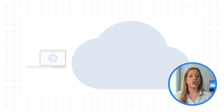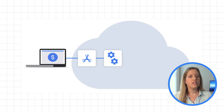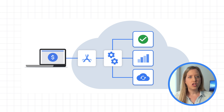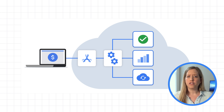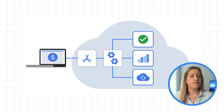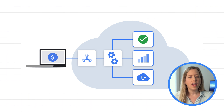Spanner does a lot of work behind the scenes to ensure availability, consistency, and performance at scale — and Google's own applications depend on it today. However, to your developers, it looks like a single scale-up database. They don't have to worry about brittle sharding, eventual consistency, or manual failover, and can focus on innovation.